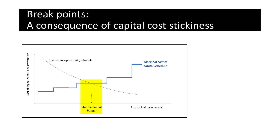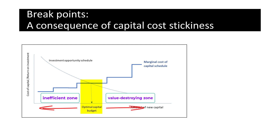This is of significant importance to the financial manager. A smaller amount of new capital raised and invested than this optimal point is inefficient because it leaves untapped opportunities for increasing the value of the company. On the other hand, raising and investing a larger amount of new capital than the optimal capital budget would be a value-destroying proposition, because the cost of capital is higher than the project's return.